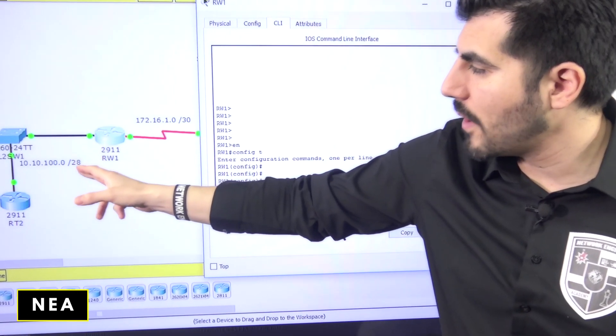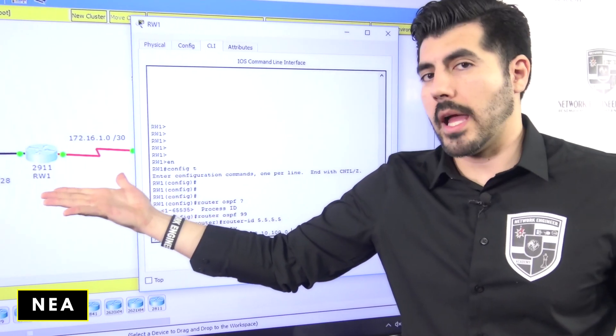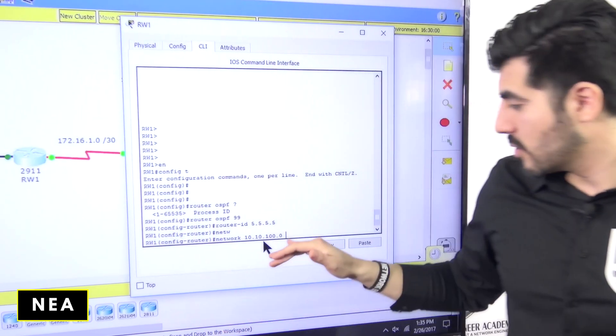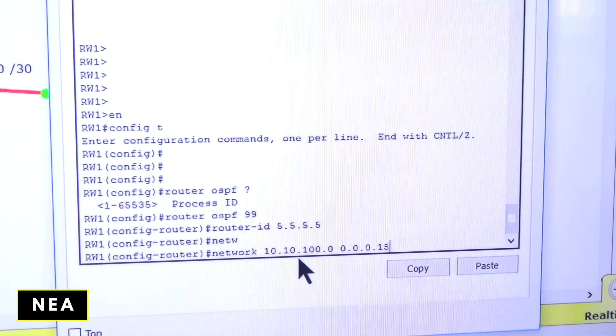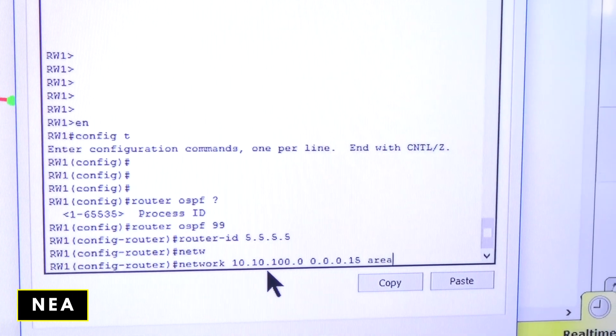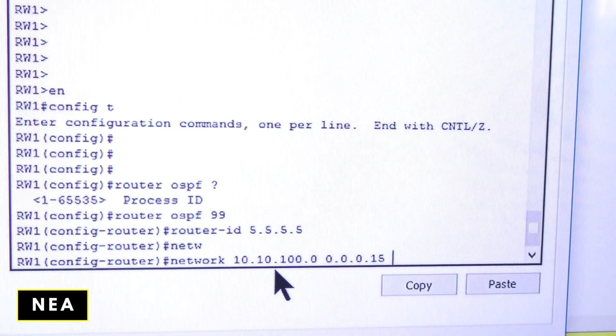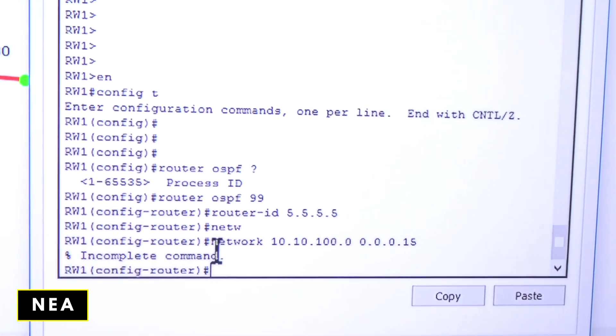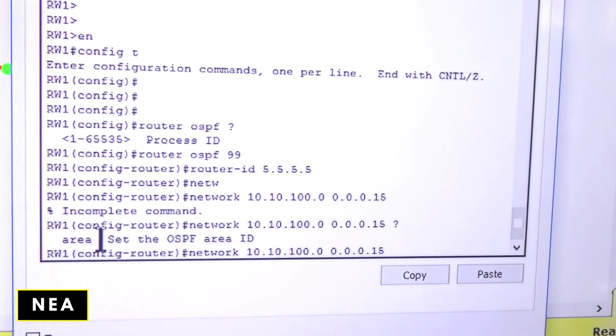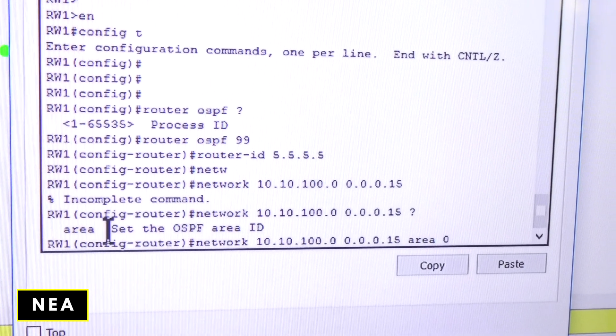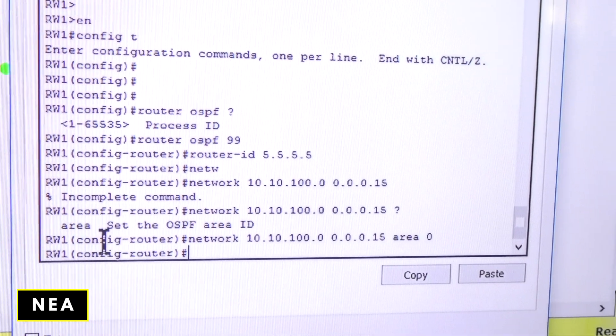So in this case for this network, the subnet mask is 255.255.255.240. So what will be the backwards, the opposite? That will be 0.0.0.15. Now I'm going to do area and I'm going to do zero, area zero. Because if I don't do that, watch what's going to happen. I'm going to click enter and it's going to say incomplete command. Let me see. Let me do question mark. Oh, I forgot to put that area. Area. And then I'm going to do area zero. Boom. Enter. I don't have any error message, so I'm good to go.